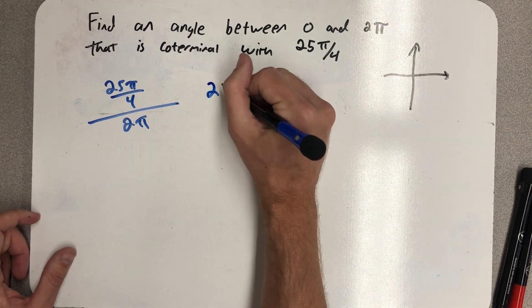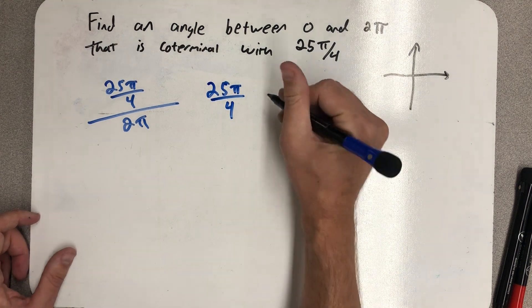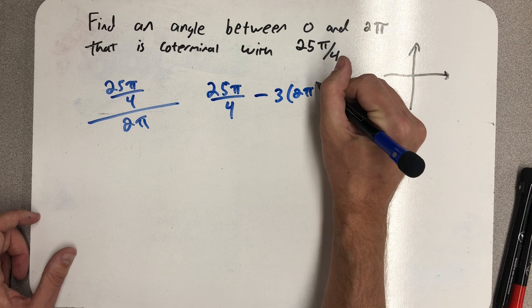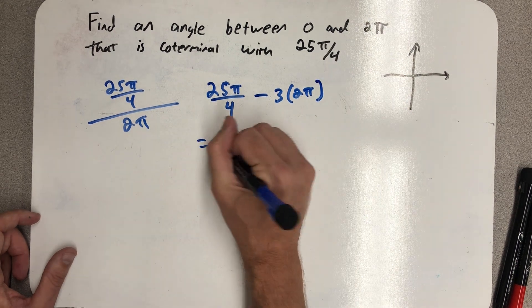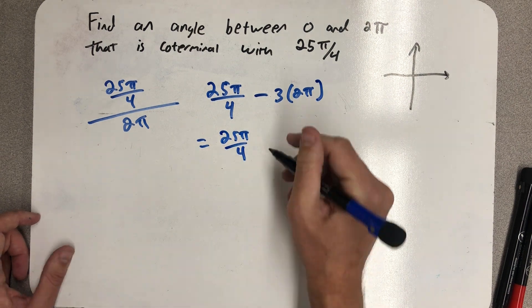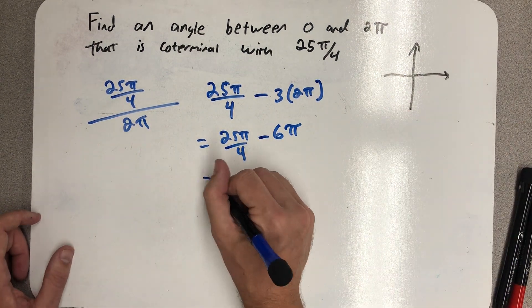So to find that angle between 0 and 2π coterminal with it, I'm going to subtract off three full revolutions. Because I know if I subtract a number of full revolutions, I'll get a coterminal angle.